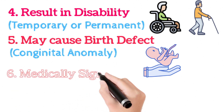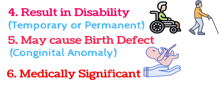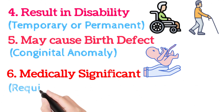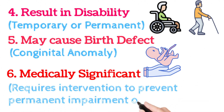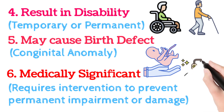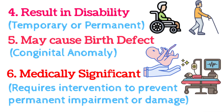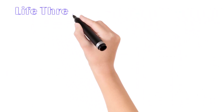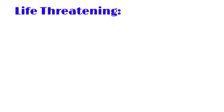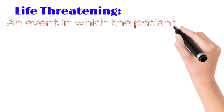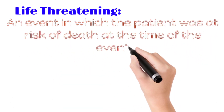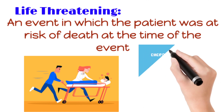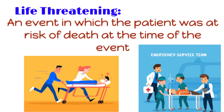The final criterion is medically significant — a condition which requires intervention to prevent permanent impairment or damage to the patient. A follow-up question might be: what is life-threatening in the definition of serious adverse event? Life-threatening is a condition that arises due to an adverse event in which the patient was at risk of death at the time of the event. In short, it is a critical condition that needs emergency medical attention.